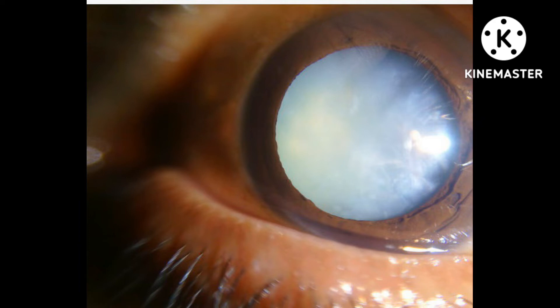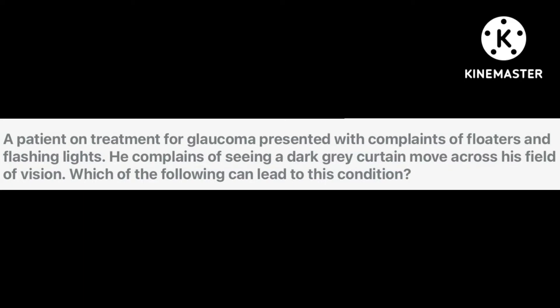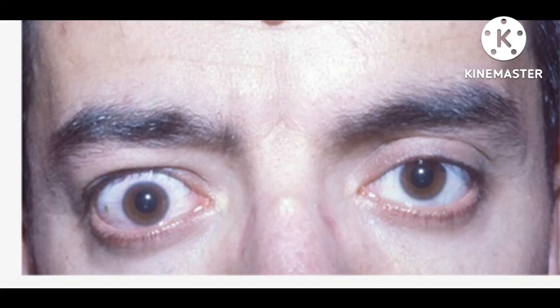At the end, there are images with high exam potential. Identify the disease and which drug causes it: the first image shows cataract caused by echothiophate or physostigmine. The second scenario — a patient on glaucoma treatment with floaters, flashing lights, and dark grey curtain — points to retinal detachment caused by any of the miotic drugs. The third image shows lid retraction, which is caused by apraclonidine.